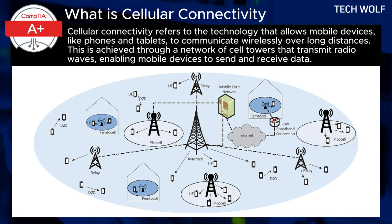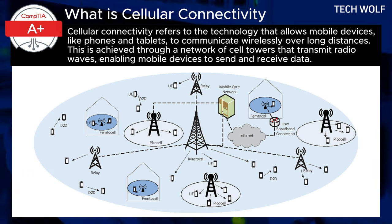Cellular networks operate on various frequencies and channels, which are carefully managed to prevent interference and allow multiple users to connect simultaneously. Over time, cellular technology has evolved significantly with each generation, offering improvements in speed, capacity, and functionality.